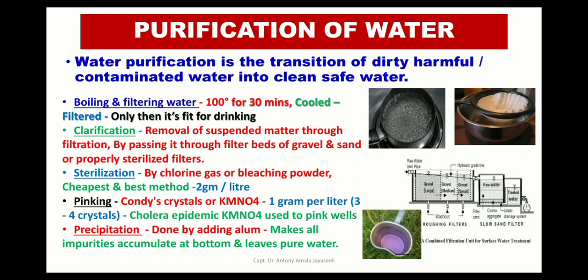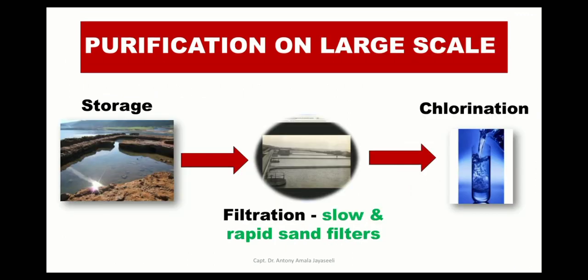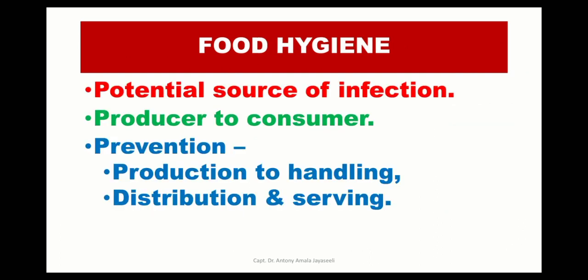Water can be purified in the following ways: by boiling and filtering, clarification, sterilization, and precipitation. On a large scale, water can be stored in water bodies and filtered using slow and rapid sand filters and then chlorinated before being given to the population to consume.